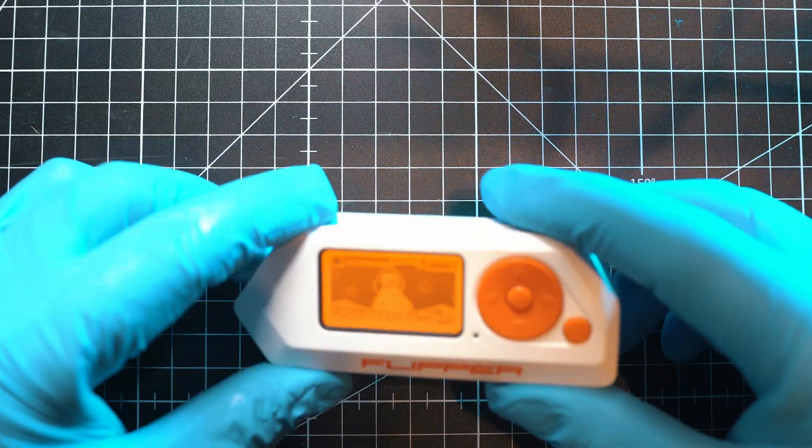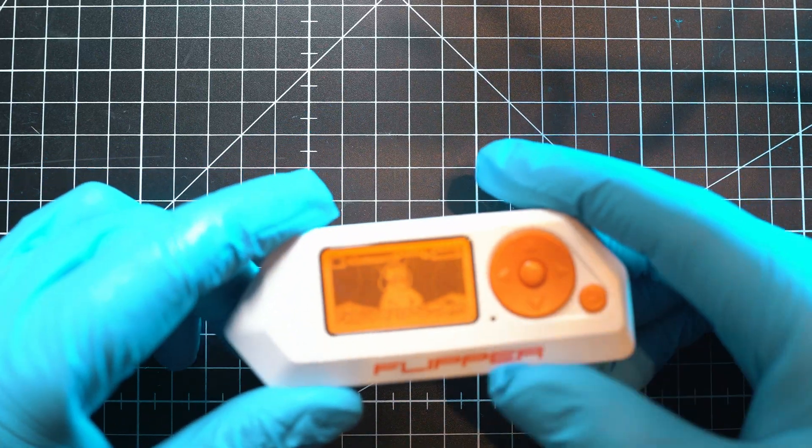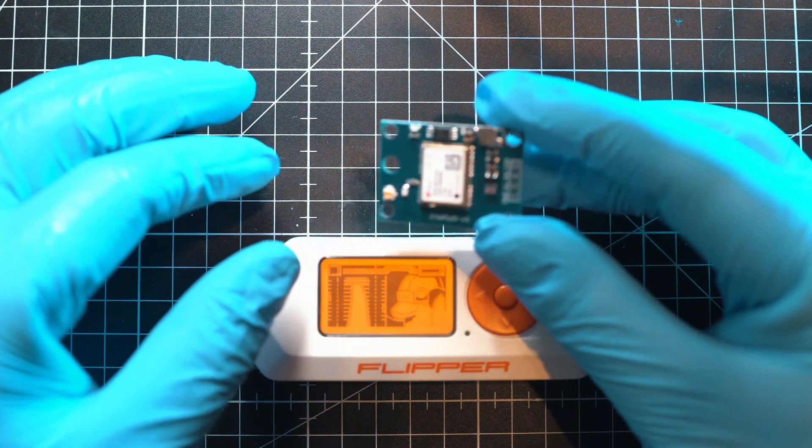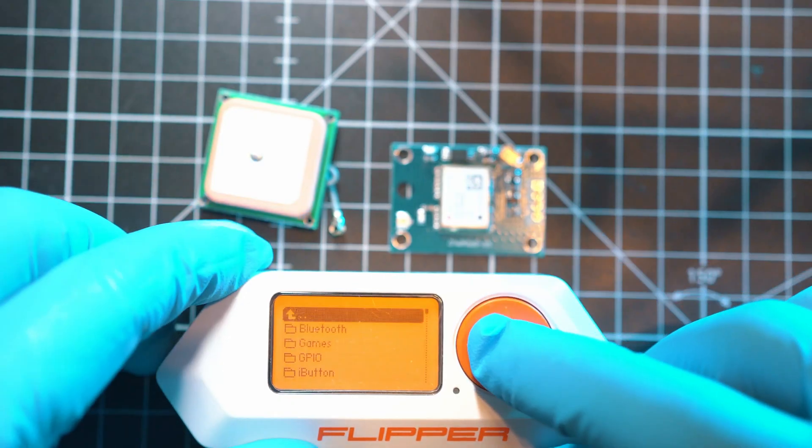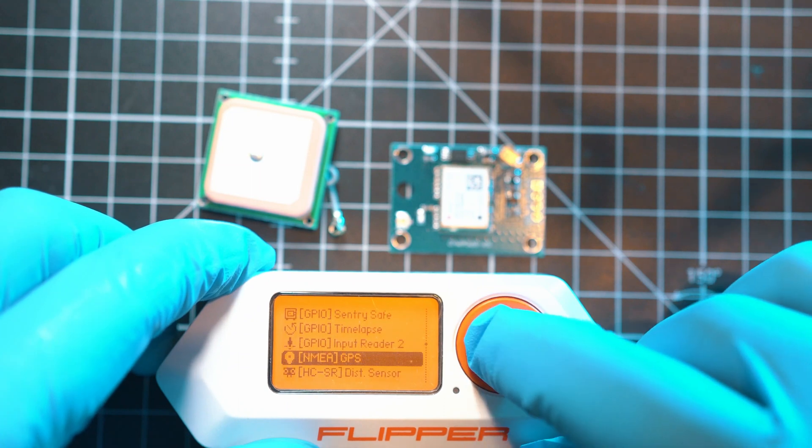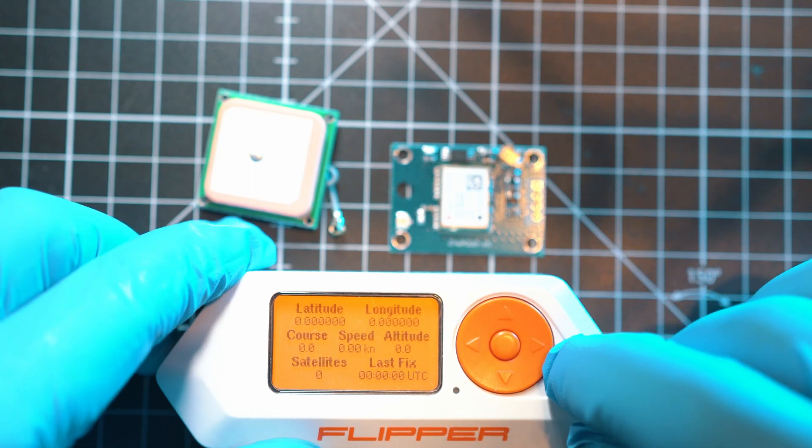Welcome back to Take A Part. Today I will show you how to add this GPS module and GPS antenna to your Flipper Zero so that you can use GPS app inside of your Flipper and see all this populated.